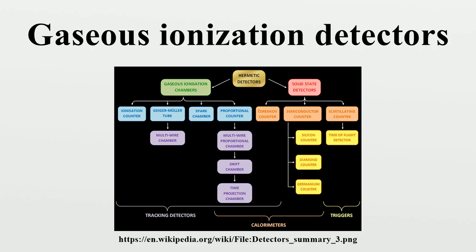The accompanying plot shows the variation of ion pair generation with varying applied voltage for constant incident radiation. There are three main practical operating regions, one of which each type utilizes.